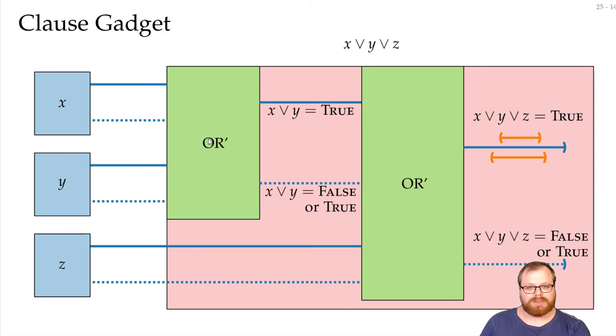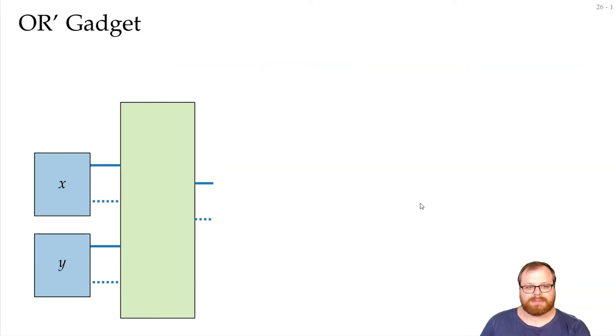It's just important that we cannot have this bar if all of them are false. So we'll now show you how to construct this OR prime gadget.